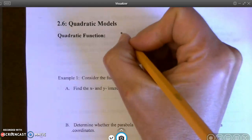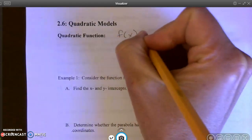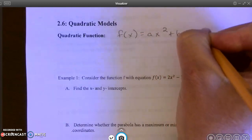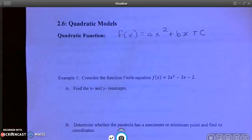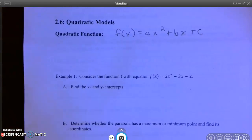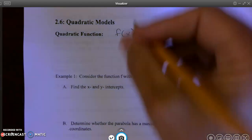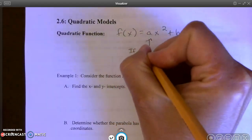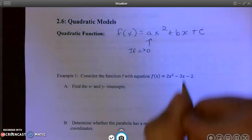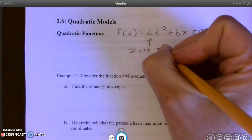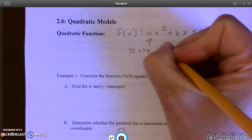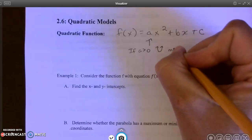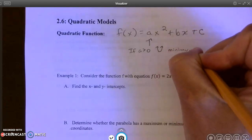A quadratic function is of the form f(x) = ax² + bx + c. When we look at the a value, if a is greater than zero, meaning it's a positive number, that means my quadratic is going to be U-shaped, and therefore the quadratic would have a minimum value.